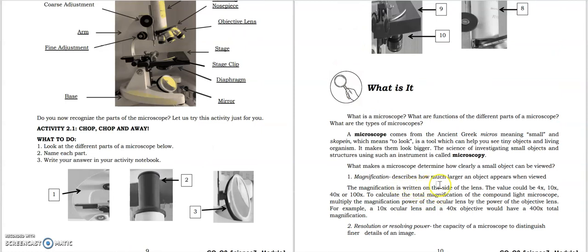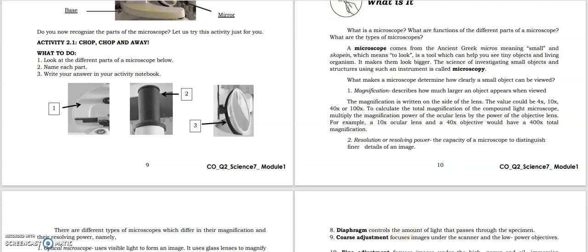What makes a microscope determine how clearly a small object can be viewed? We have magnification and resolution or resolving power. Magnification describes how much larger an object appears when viewed. Resolution is the capacity of a microscope to distinguish finer details of an image. For magnification, we have a computation. For example, if the lens used is 10 times and the objective is 40 times, we multiply 10 and 40 to get 400. Then copy the common variable x. So 400x or 400 times total magnification.